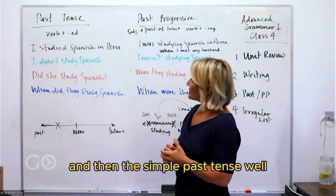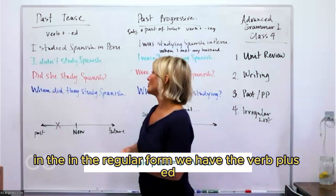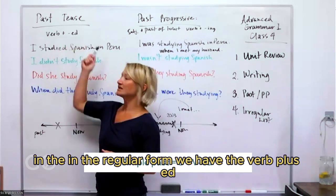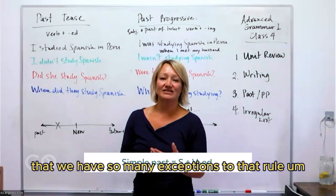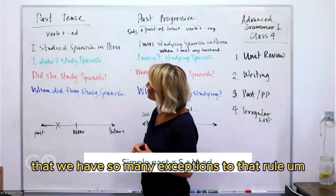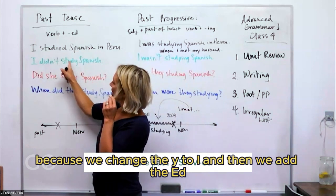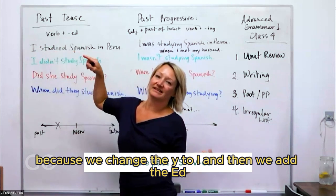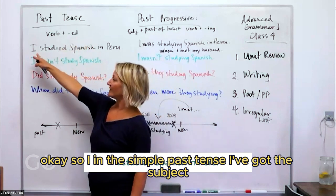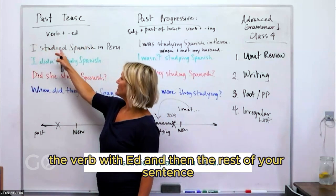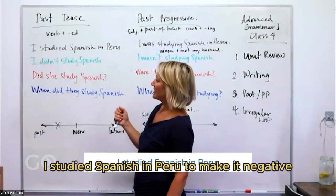Now the simple past tense. In regular form, it's verb + '-ed.' But English has many exceptions. For example, 'study' changes the 'y' to 'i' before adding '-ed.' So the formula is: subject + verb with '-ed' + rest of sentence. For example: 'I studied Spanish in Peru.'